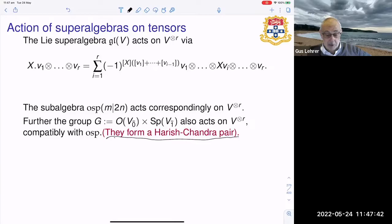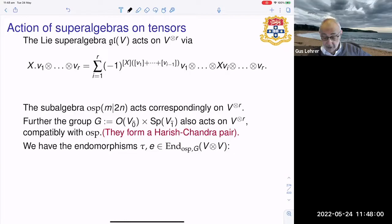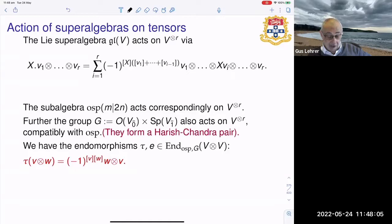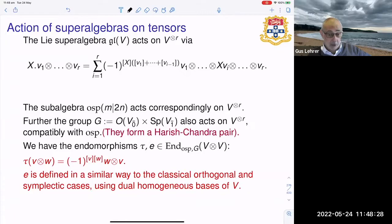So we have the endomorphisms which were seen before. The tau, as you'd expect, is going to have a sign in it, this sign. You can check is compatible with the orthogonal and symplectic cases which we've already treated. And e is defined in a similar way to the classical orthogonal and symplectic cases using dual homogeneous bases of v. It's a little more complicated, but you'll remember e was this invariant so-called Casimir element. It looks like basically the sum of b_i tensor b^i where these are dual homogeneous bases of v.